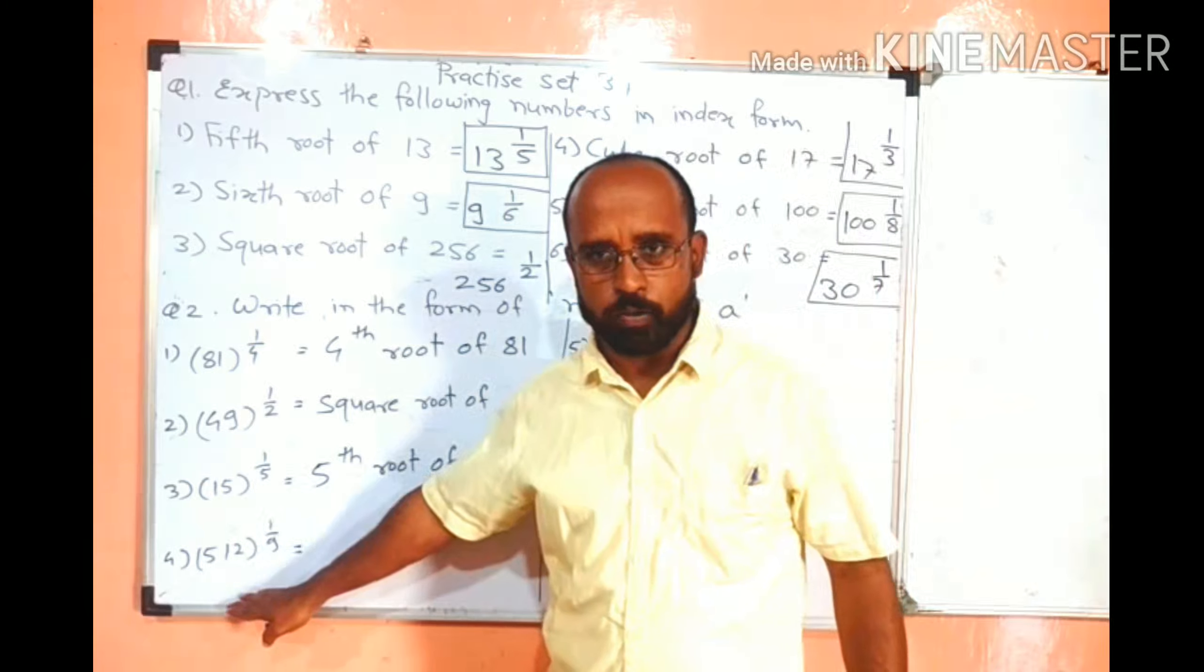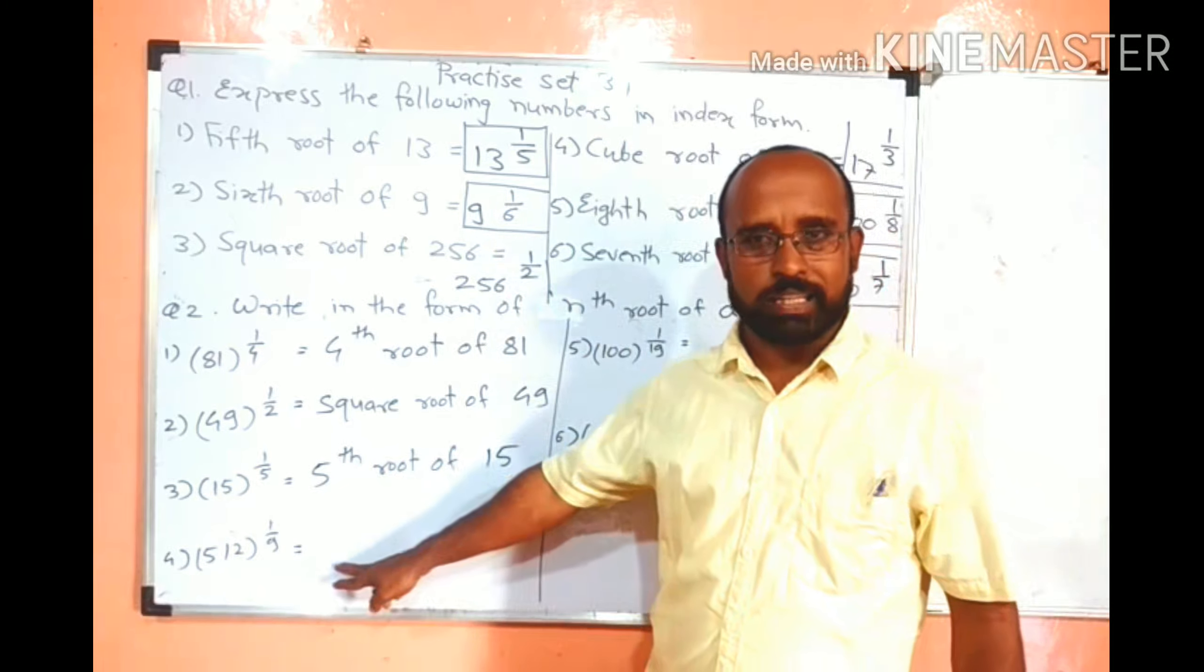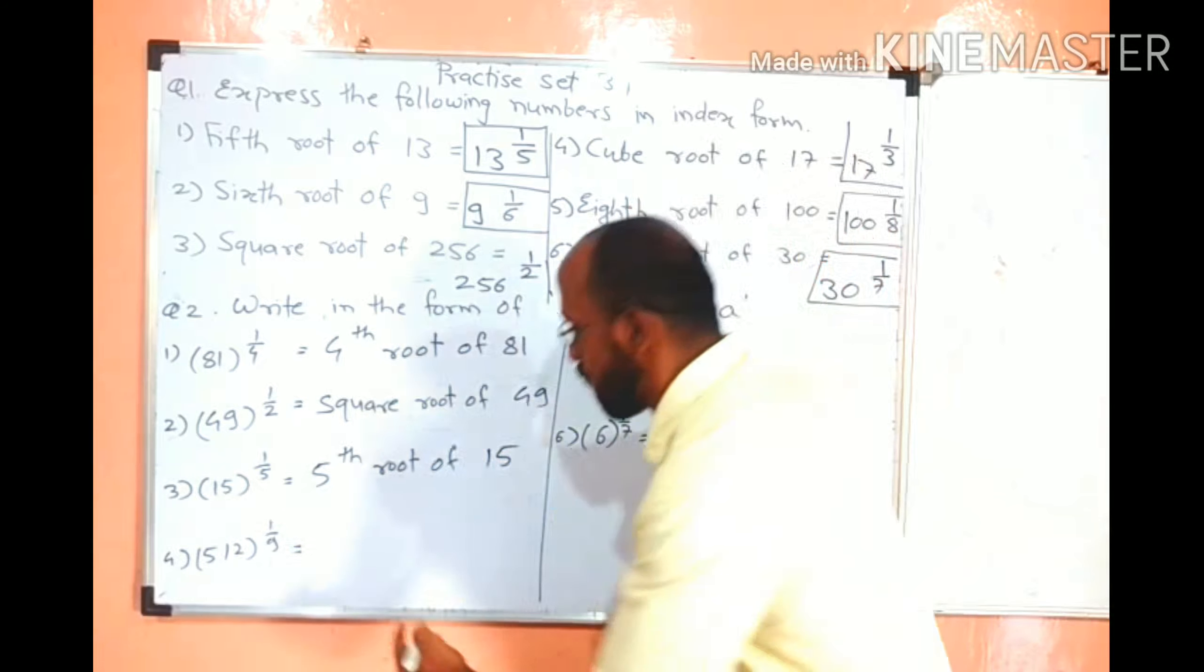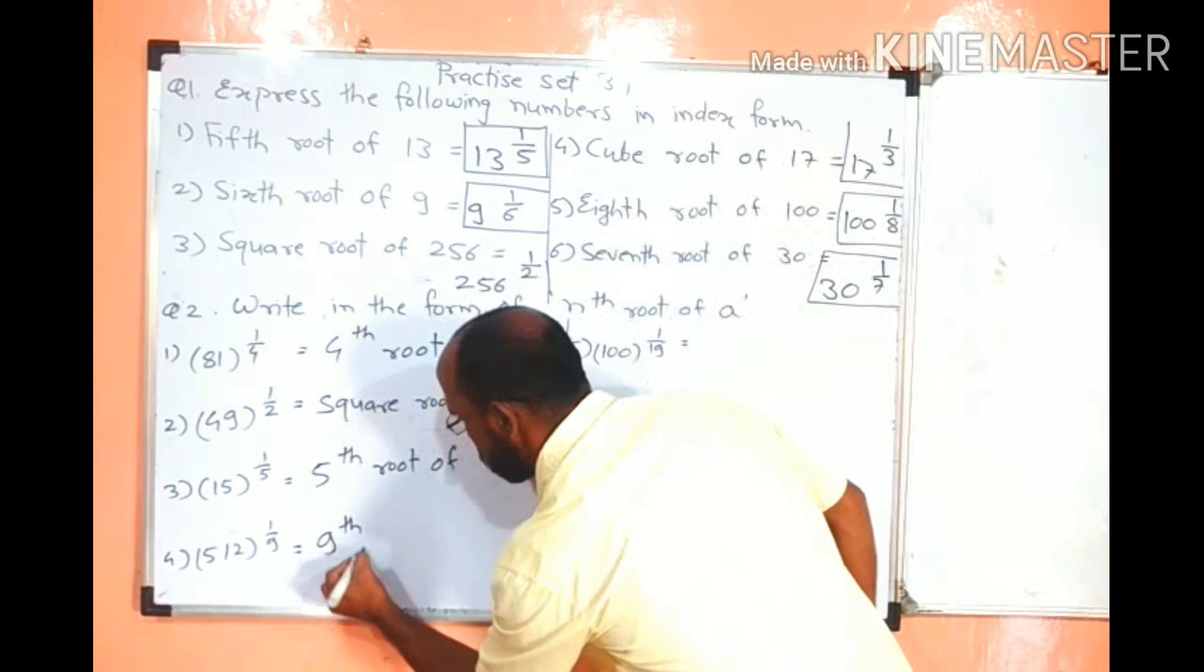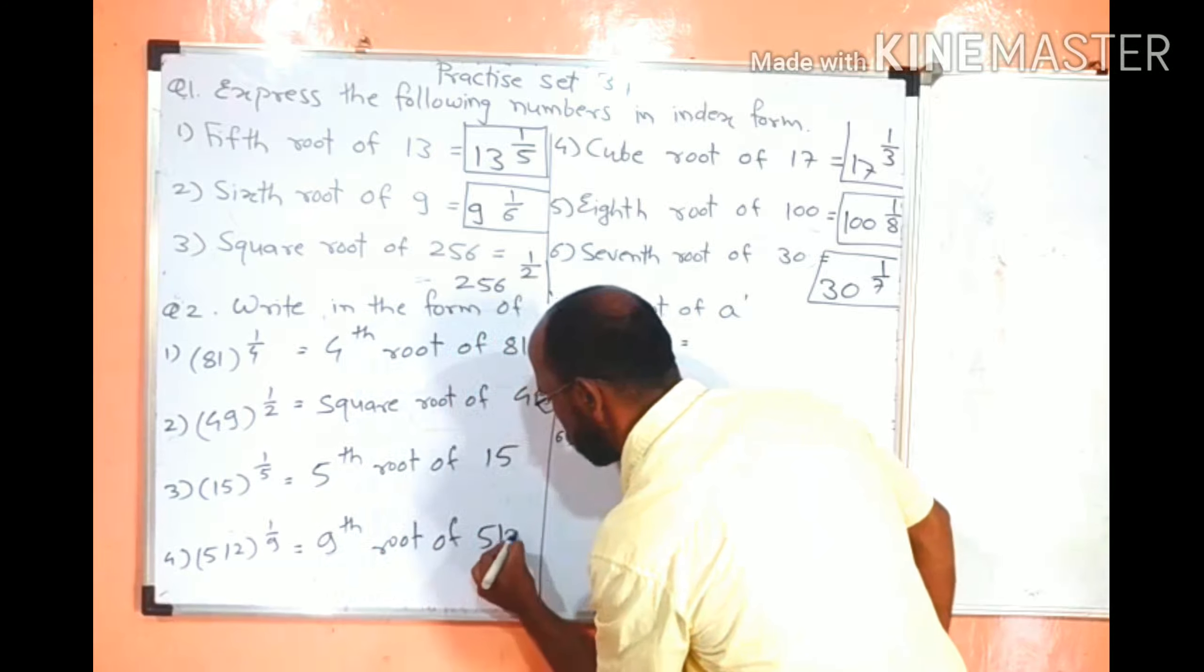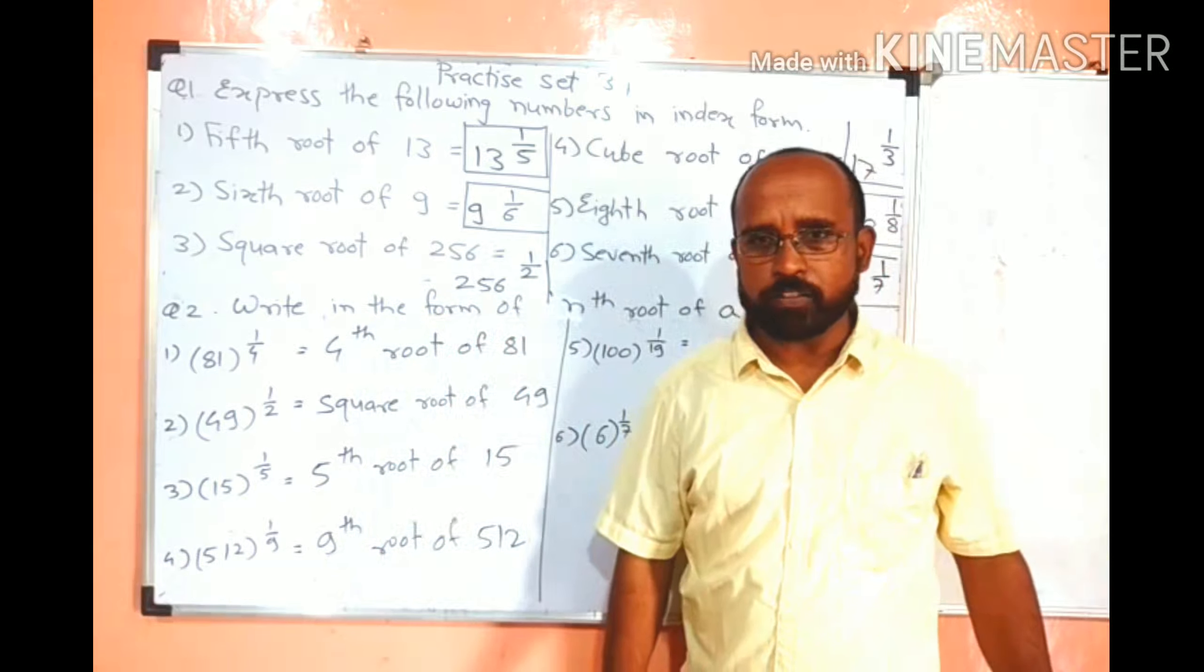Which number is 512 raised to 1 upon 9. Which number is base? 512. Which number is index? 9. So how to write ninth root? So write it as ninth root of base is 512. Clear friends?